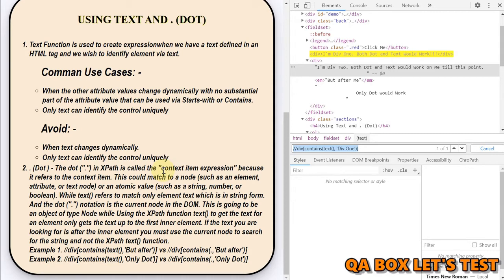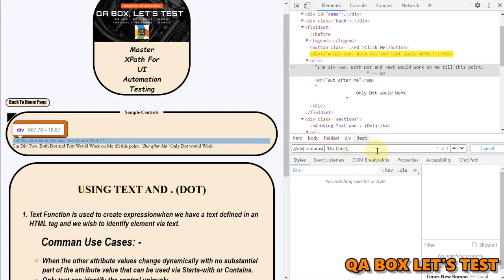So while text refers to match only element text, which is in string form, and the dot notation is the current node in the DOM. This is going to be an object of type node, while using the X path function text to get the text for an element, only gets a text up to the first inner element. If the text you are looking for is after the inner element, you must use the current node to search for the string and not the X path text function. Let's see that. So we are able to identify this here. Let me use the dot in here. Same result. It works.